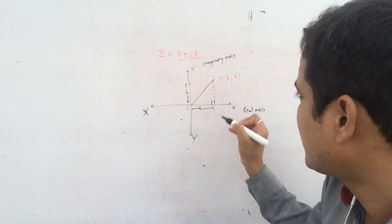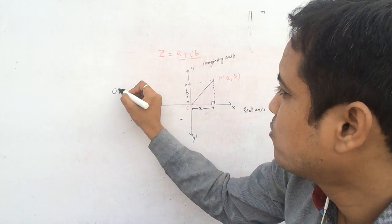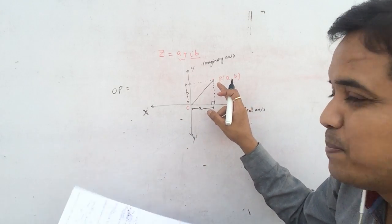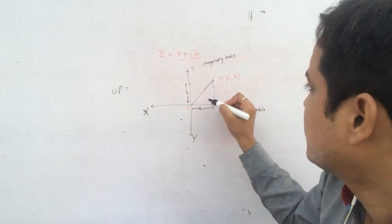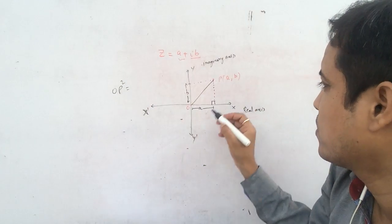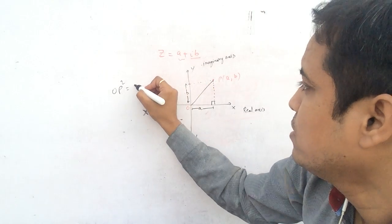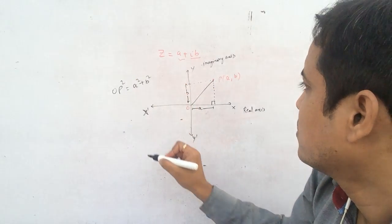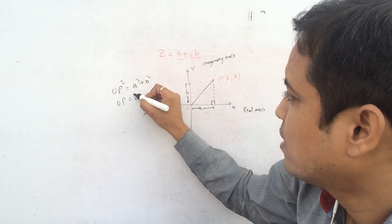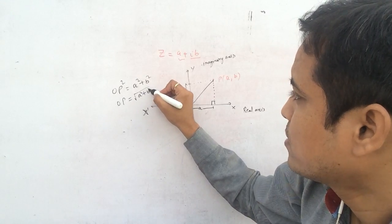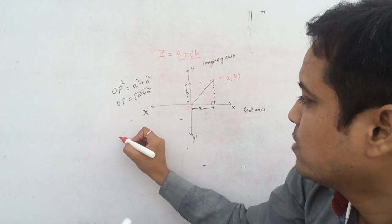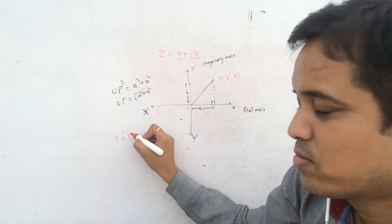When you find the value of OP — the distance of point P from the origin — you use the right angle triangle. Hypotenuse squared equals base squared plus perpendicular squared. The base is A and the perpendicular is B, so it would be A² + B². Therefore OP equals the under root of A² + B².